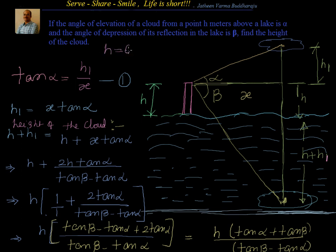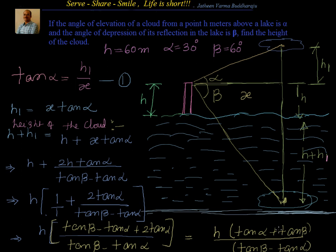Now what I want you to do is try this with h equals 60 meters, alpha equals 30 degrees, and beta equals 60 degrees. Try to solve it step by step as we did, without directly substituting into the formula. Then verify that your answer matches the formula result. The answer will be 120 meters. You can cross-check that.